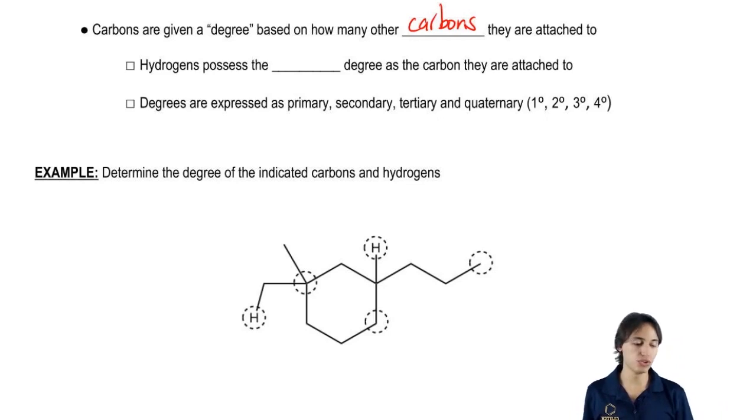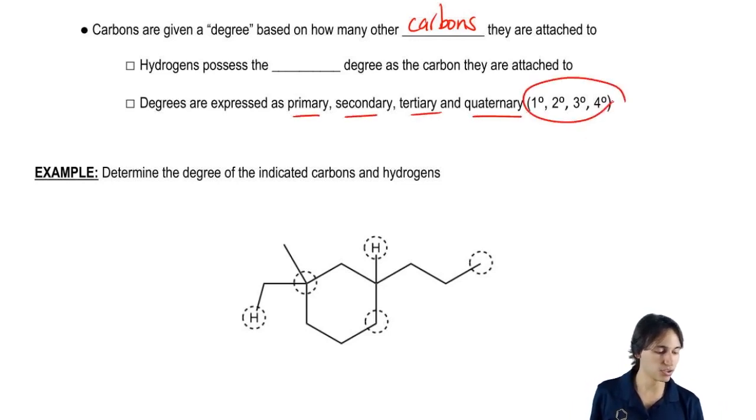Basically the words that we use for that are primary, secondary, tertiary, and quaternary or these little degree symbols (1°, 2°, 3°, 4°). All that means is it tells you how many other carbons are directly attached to that carbon.